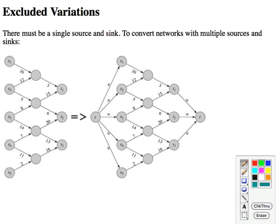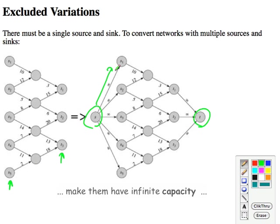Another excluded variation that's very easy to deal with is that we can't have multiple sources and sinks. But that's easy because we can just add a single source and a single sink, and then make them have infinite flow from all of the other sources and sinks.